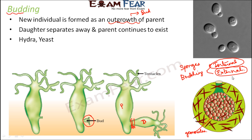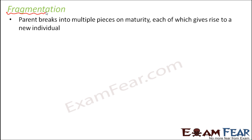Budding is very common in hydra, yeast, and also in porifera or sponges. Now let us look at the next type, that is fragmentation. The word fragmentation is derived from 'fragment,' meaning the parent is going to get divided into fragments or pieces. The parent breaks into multiple pieces on maturity, each of which gives rise to a new individual.